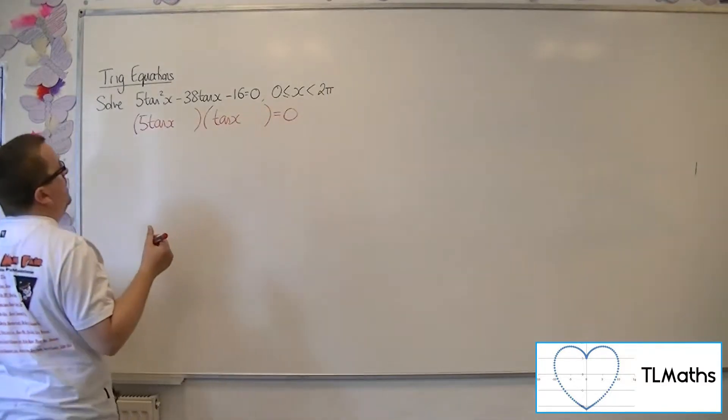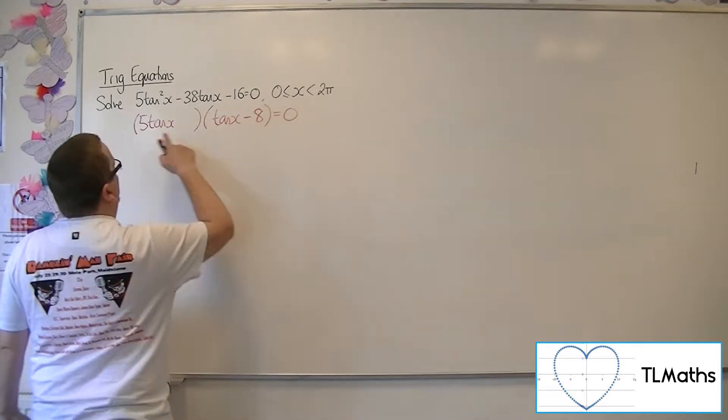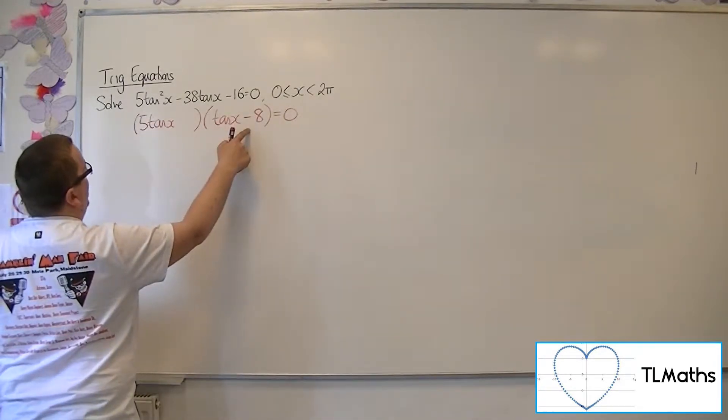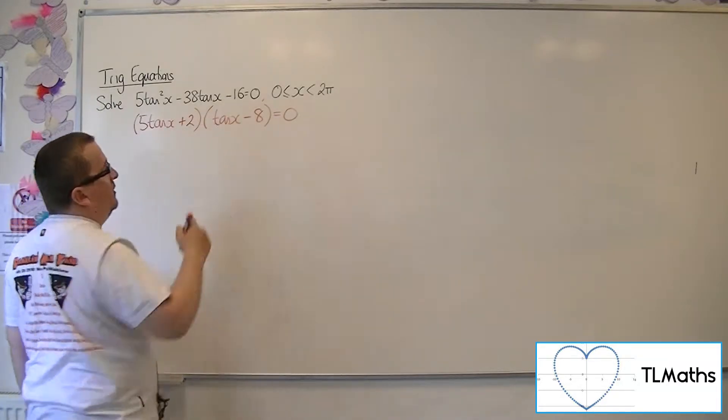Okay, now this would need to be minus 8 to make the minus 40 tan x. And so I'd have to have a plus 2, 2 times minus 8 makes the minus 16.